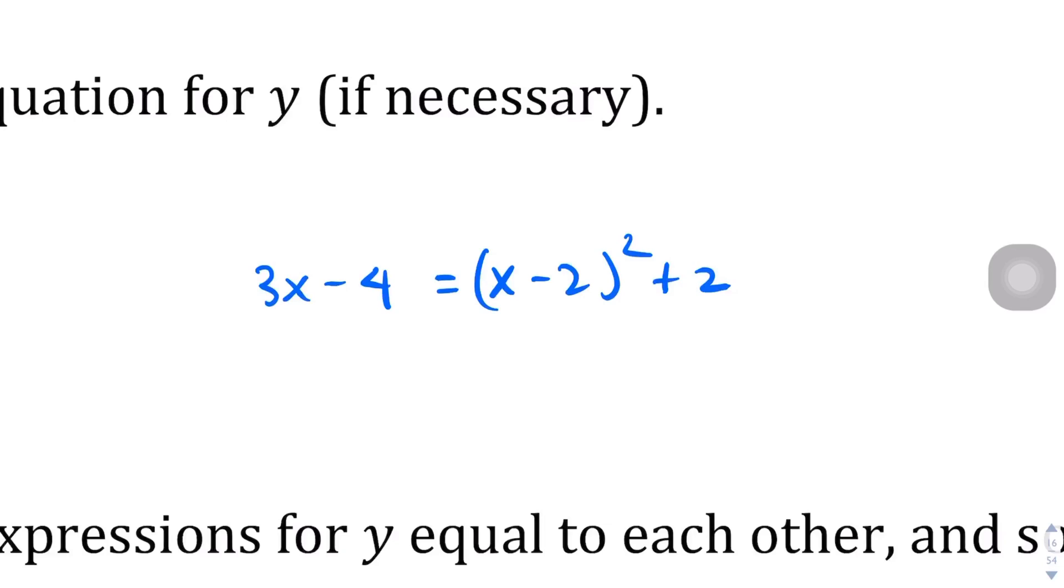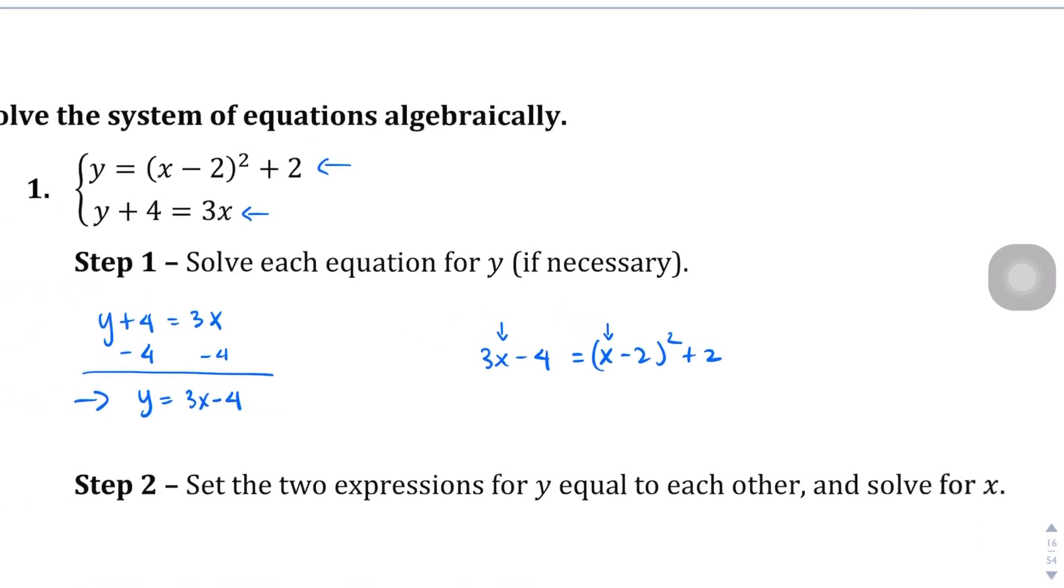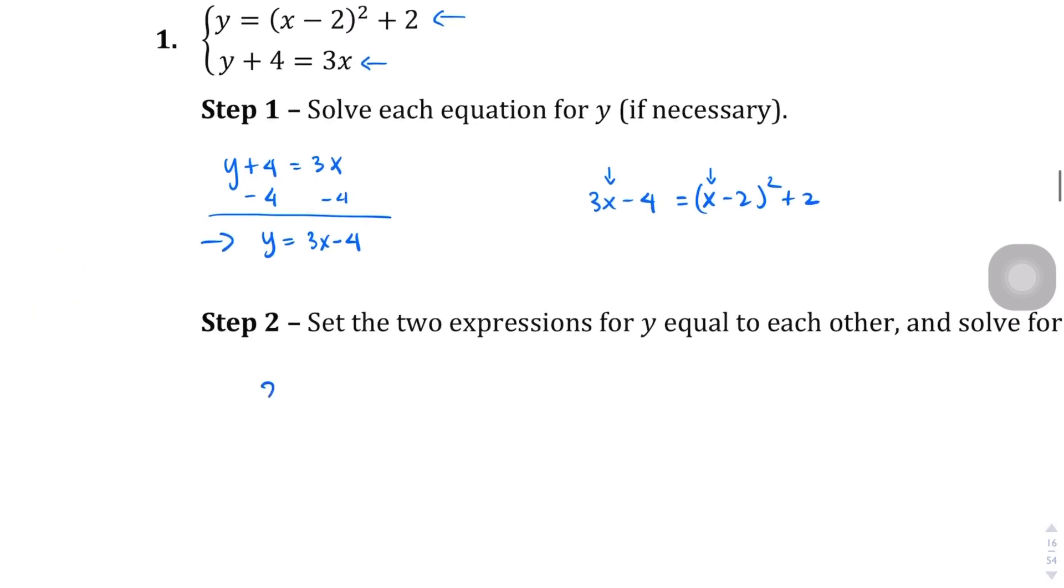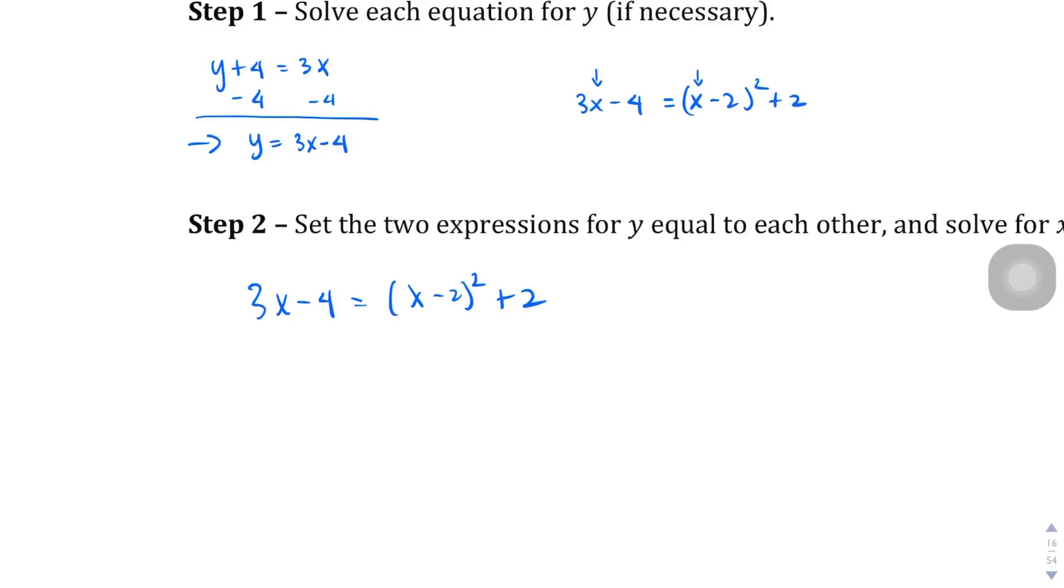Now, why is it important? Well, before when we had two different variables, we couldn't solve it. But now that we have simplified this to just solve for x, we can solve this equation for y. So let's go ahead and do that. 3x minus 4 equals x minus 2 squared plus 2. So from there, let's go ahead and solve for x. Let's get rid of this guy first. Let's subtract 2 from both sides. And when we do that, we get 3x minus 6 equals x minus 2 squared.